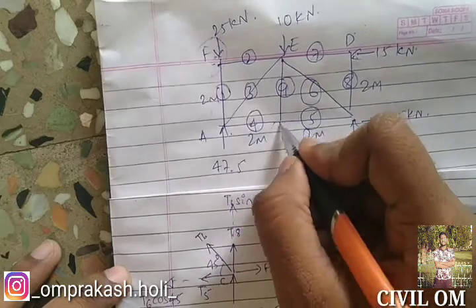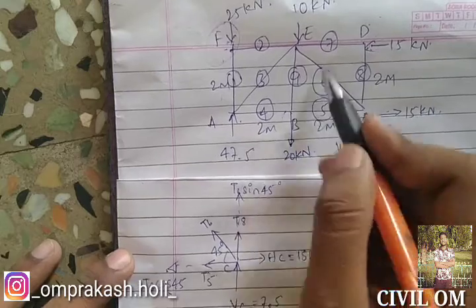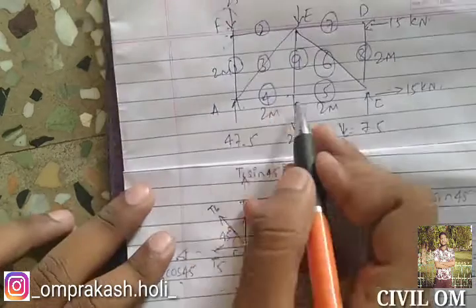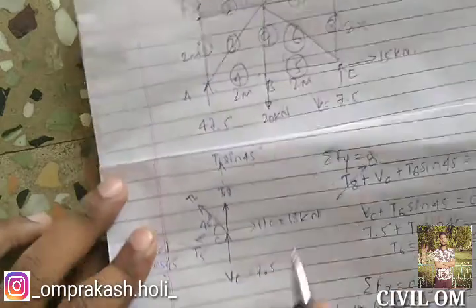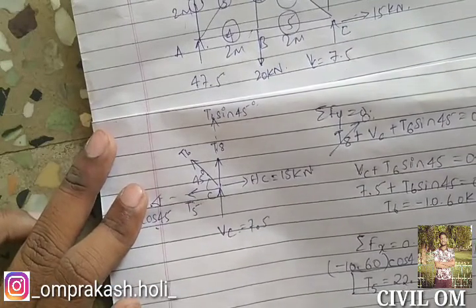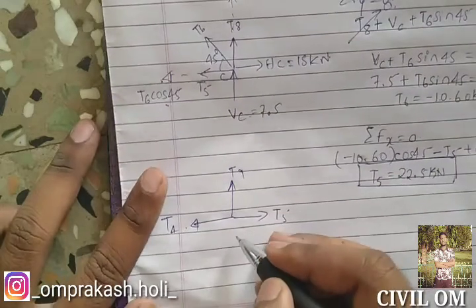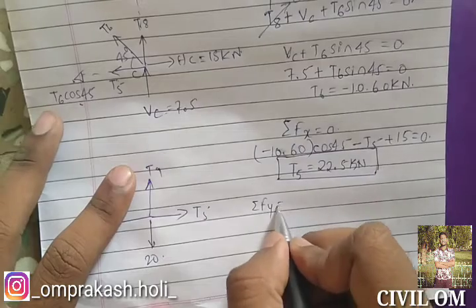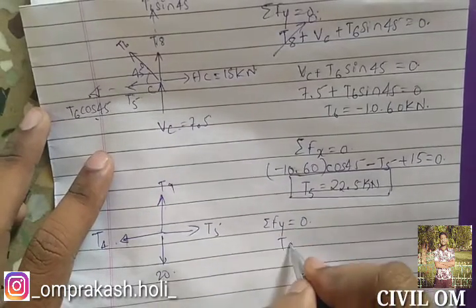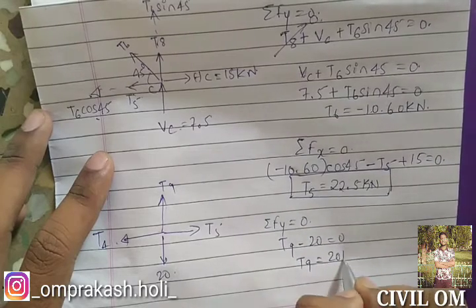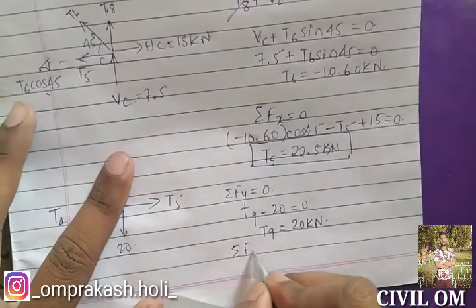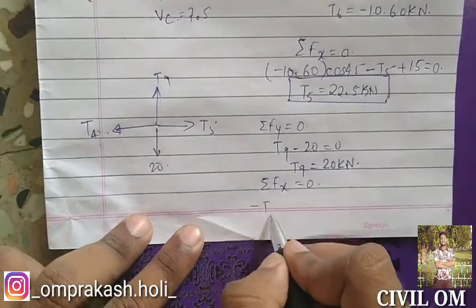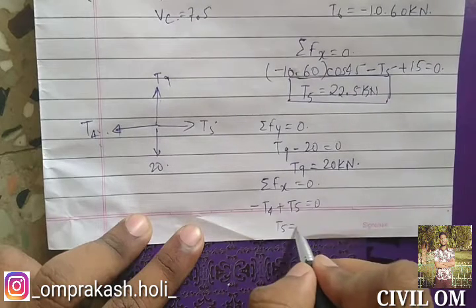Next, the free body diagram of point B, where we have 20 kilonewton acting downward. We have T4, T5, and T9. From sigma FY equal to 0: T9 minus 20 equal to 0, so T9 equals 20 kilonewton. From sigma FX equal to 0: minus T4 plus T5 equal to 0, so T5 equals T4.